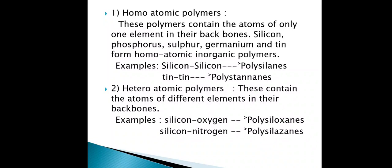Examples of homoatomic polymers: silicon–silicon bonds give polysilanes, and tin–tin bonds give polystannins. These are made up of one type of element.